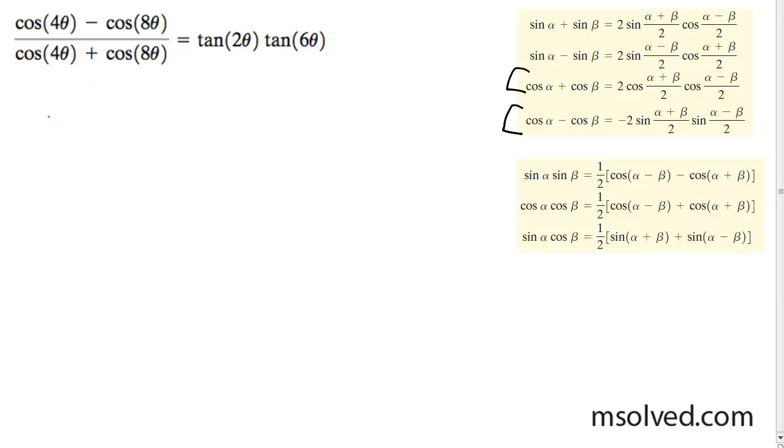For the numerator we're gonna get negative 2 sine of 4 theta plus 8 theta over 2, times sine of 4 theta minus 8 theta over 2.